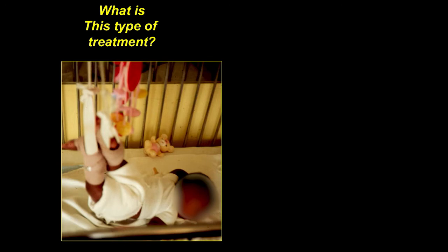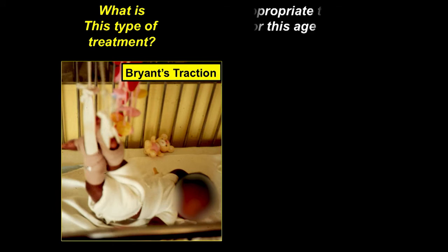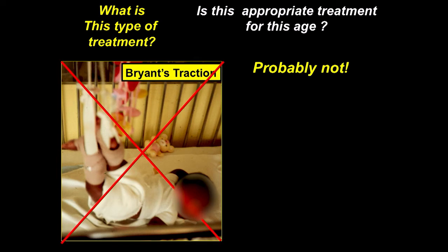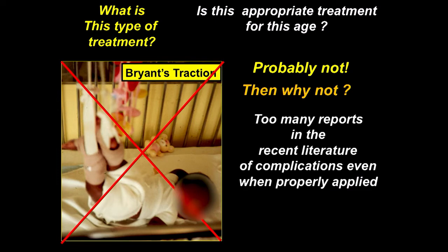Bryant's traction was used for many years and was considered effective. We used to say it could be used if the child weighed no more than 30 pounds and was less than a year old. We don't use it anymore because there are many reports of complications even when following those rules. The main issues are hyperextension causing vascular spasm, and the fairly tight ACE bandage required to hold position decreasing blood flow — especially problematic as the child gets older and more pressure is needed to perfuse the extremities.